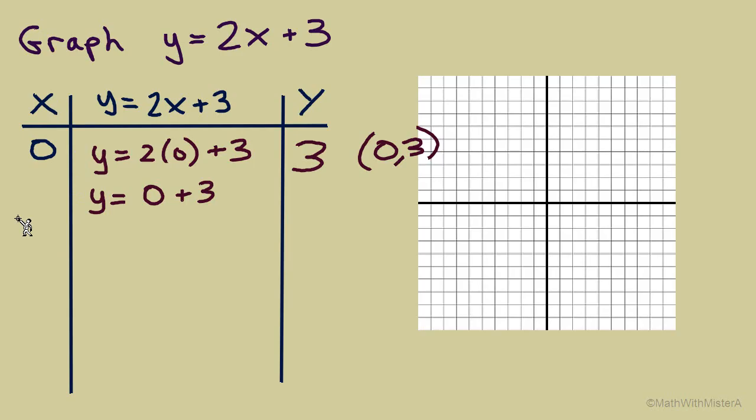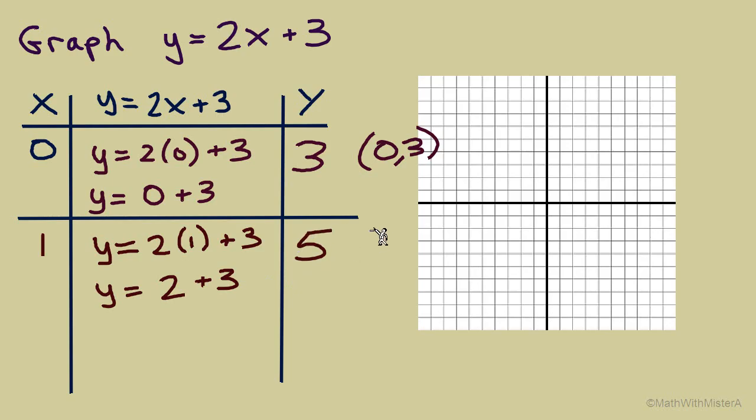So we found the first solution. Now we'll choose another value for x. Let's keep it simple and choose x equals 1. Here we're rewriting the equation but putting 1 in place of x. 2 times 1 equals 2. And 2 plus 3 equals 5. When x equals 1, y equals 5. That will be another ordered pair solution that we plot.